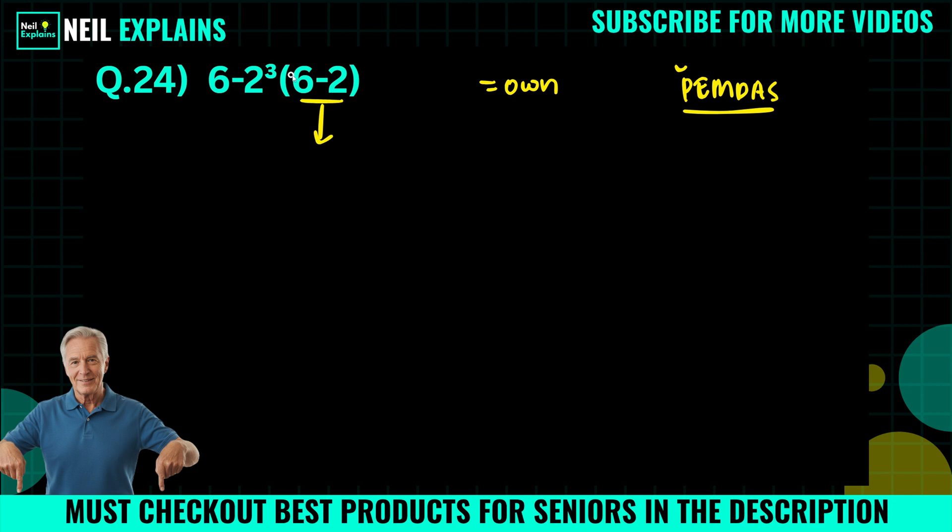6 minus 2 equals 4. Our question becomes 6 minus 2 to the power 3 times 4.